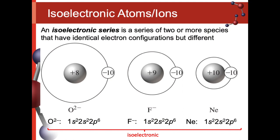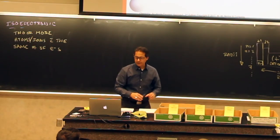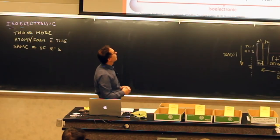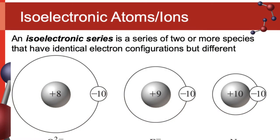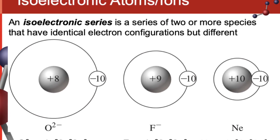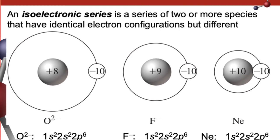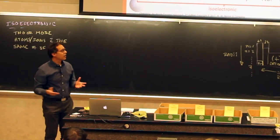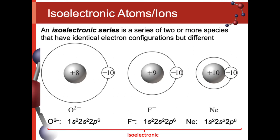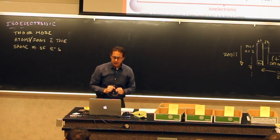Fluorine, which is next to oxygen, picks up one electron and then becomes isoelectronic with neon — same number of electrons as neon. And then neon itself. All of these have ten electrons total. What do you notice about their sizes? They are different sizes because they have different numbers of protons. More protons pull in those electrons, so the atom becomes smaller.